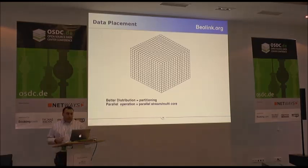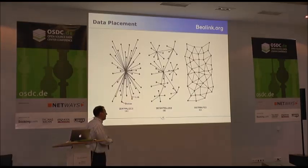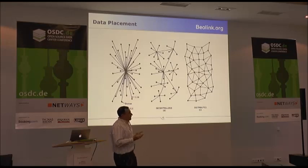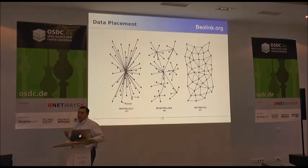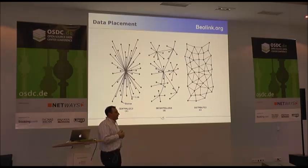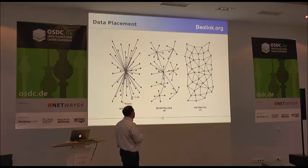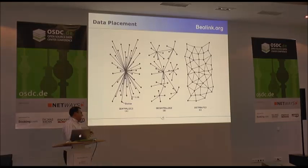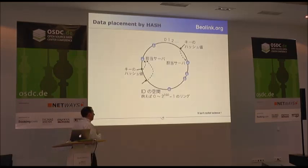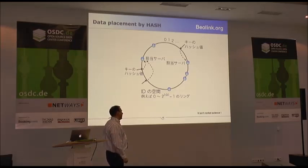When you have divided your information into small elements, you have to decide how you want to deploy and place them. There are mainly three approaches today: one is centralized — someone knows where all pieces of your information are. Or completely decentralized — you have a mathematical formula that can look up where to find the information based on the content. There is also a cross between the two that is more distributed, trying to get the best of both.